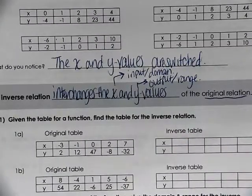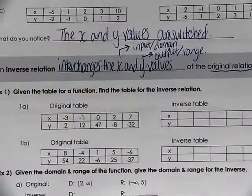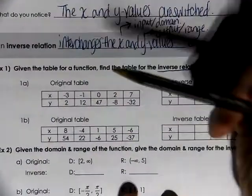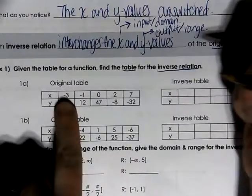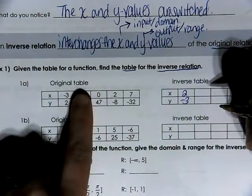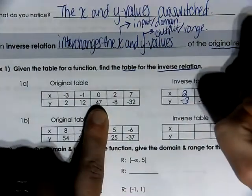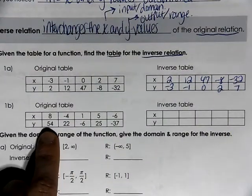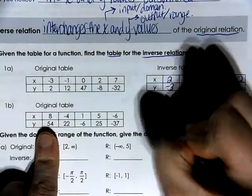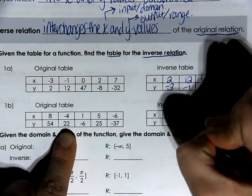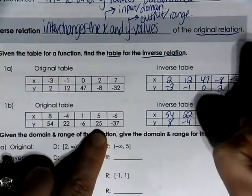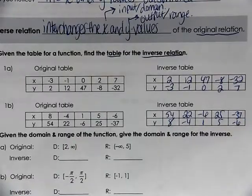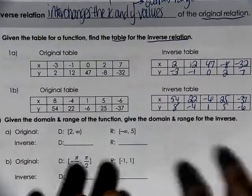In example number one, given this table of a function, we want to find the table for the inverse relation. All we have to do is flip-flop the x and y values. So instead of negative 3, 2 we'll have 2, negative 3. Instead of negative 1, 12 we'll have 12, negative 1. Then 4, 7 becomes 7, 0; negative 8, 2 becomes 2, negative 8; and negative 32, 7 becomes 7, negative 32. We do the same for the second table: 8, 54 becomes 54, 8; negative 4, 22 becomes 22, negative 4; and so on. These are inverses of each other because the x and y values have been interchanged.